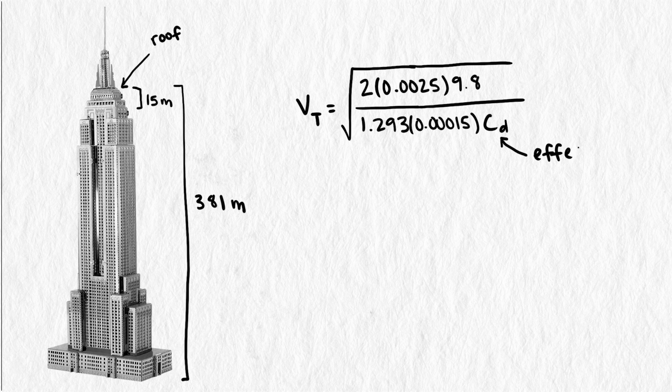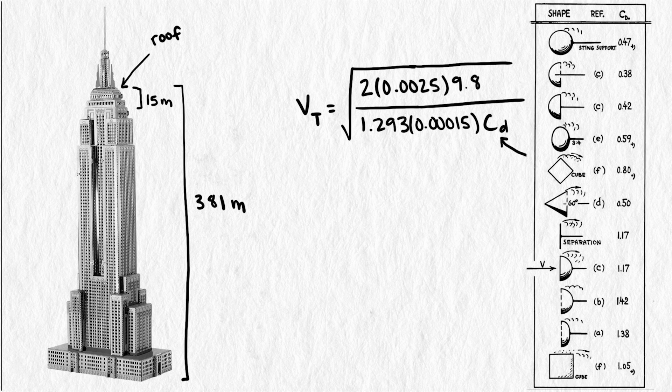This quantity is essentially how great an effect air resistance has on the shape of our object. Our object is a circular disk, which has a drag coefficient of 1.17. Putting all this into our equation gives us a terminal velocity of only 14.7 meters per second, which is about 33 miles an hour. Not that fast.